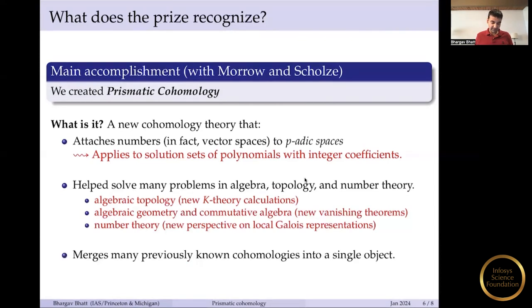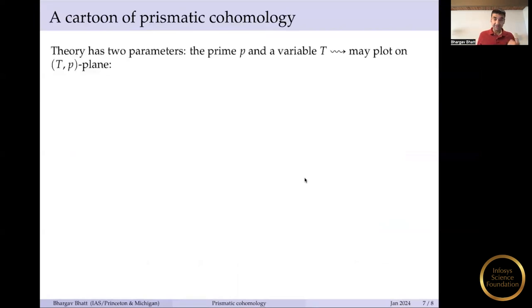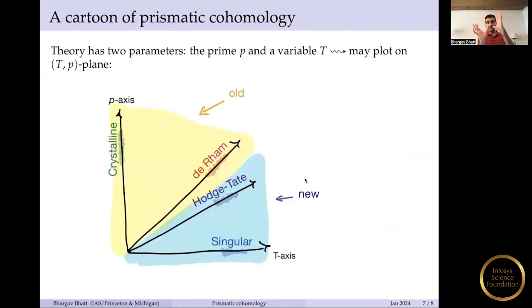And then finally, what this theory is actually doing is that it's merging all those other theories I had on the previous slide together into a single object. And so let me just give you a cartoon of what this theory looks like. In Betti's theory, there was a single parameter, which is this prime number p. Now there are two parameters. There's a prime number p, and then there's an auxiliary variable t. And so prismatic cohomology lives on the (T, p)-plane. So it's a two-dimensional object. And what happens is that if you restrict to a one-dimensional subset of it, like the t-axis, here you recover Betti's theory, singular cohomology. On the p-axis, you recover something called crystalline cohomology. Over here, you recover something called de Rham cohomology, and so on. And roughly, the picture is that the region that I've shaded in yellow was the theories we knew about before. And the region in blue is something new. And that's where a lot of the applications are coming from.